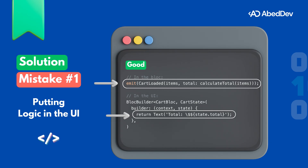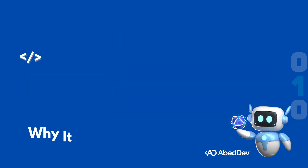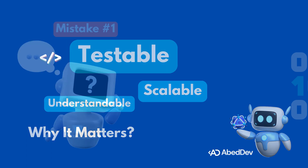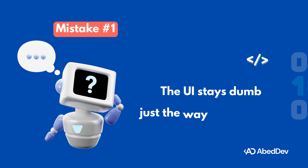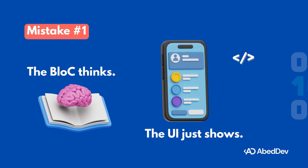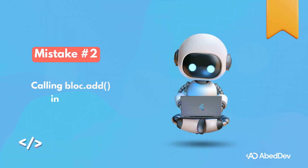Now in the UI, all you need is to display the data — clean, simple, and testable. When logic lives in the bloc, your app becomes easier to test, easier to scale, and easier to understand. The UI stays dumb, just the way it should be. The bloc thinks; the UI just shows.